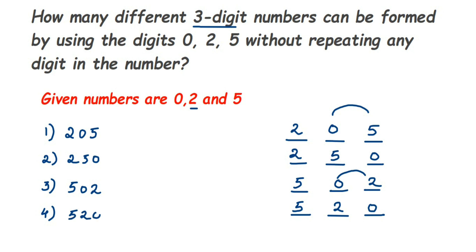Note that we cannot take zero in the beginning, as it would form a two-digit number, not a three-digit number. So we have only four different three-digit numbers: 205, 250, 502, and 520. This is an important type of question that can come for two marks. If you have further questions or doubts, you can drop a comment. Thank you for watching.